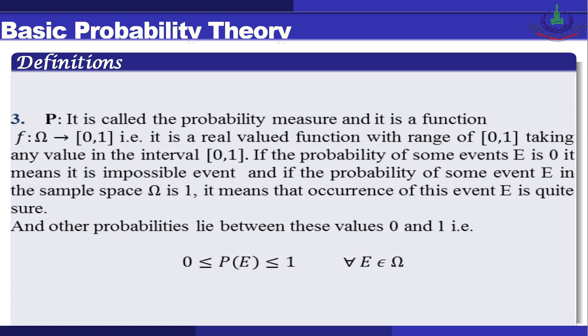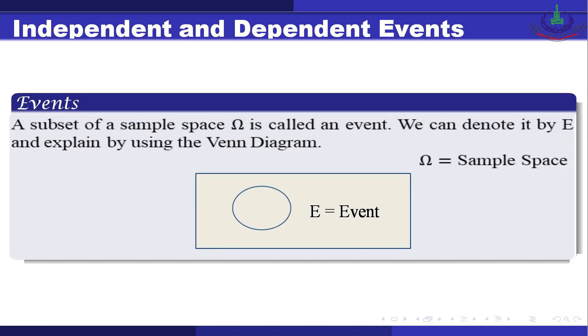Now we define P, called the probability measure. It is a function from omega to [0,1], that is a real-valued function with range zero to one. If the probability of some event is zero, the event is impossible and cannot happen. If the probability of event E is one, the event will definitely happen. All other probabilities lie between zero and one, so: 0 ≤ P(E) ≤ 1 for all events E belonging to the sample space omega.